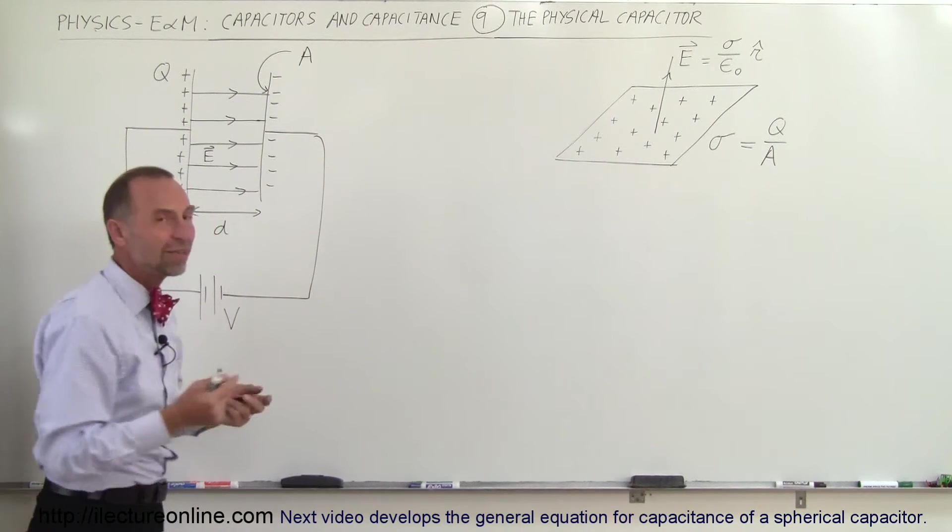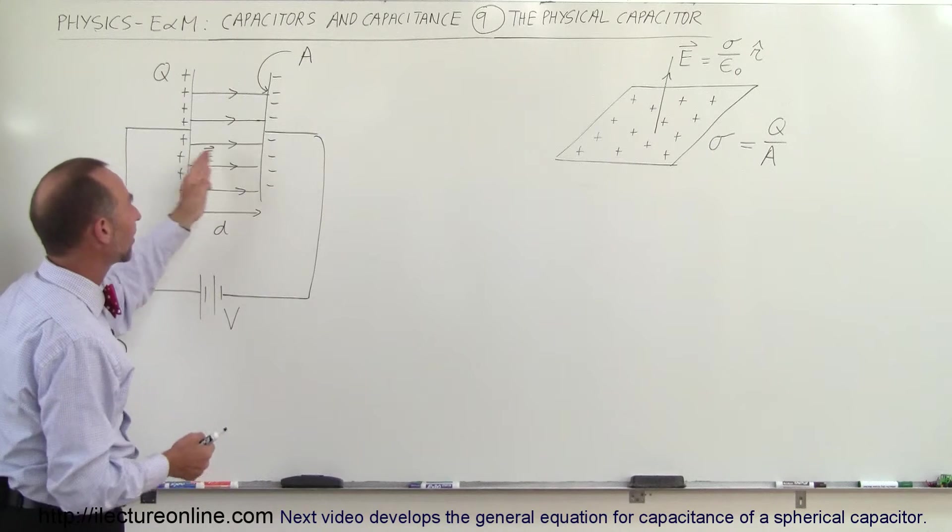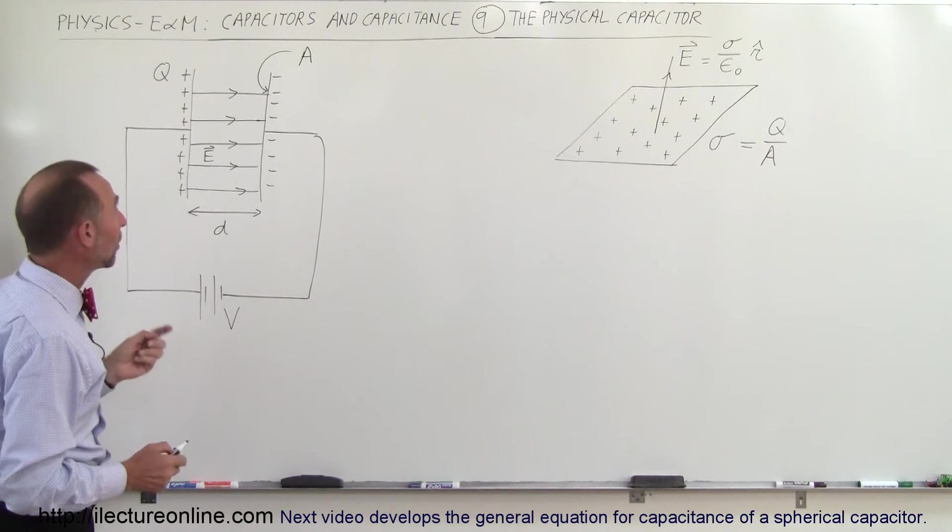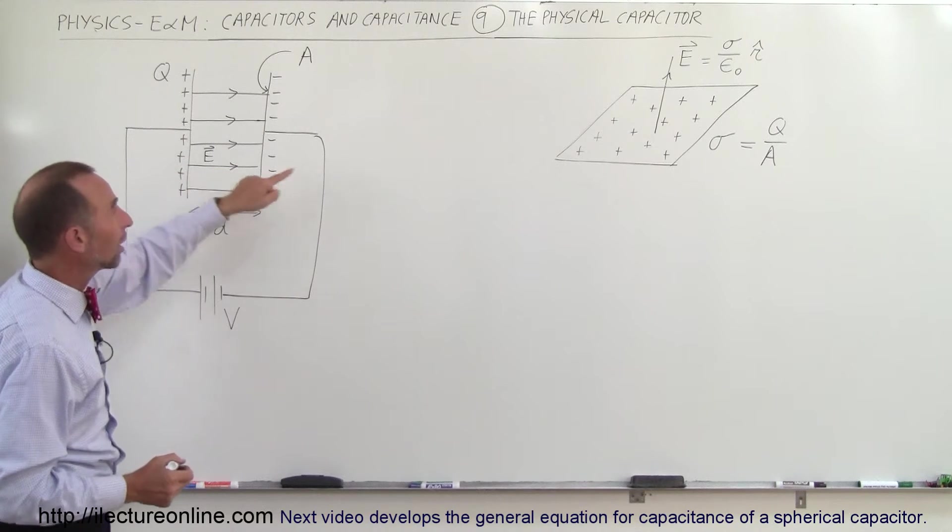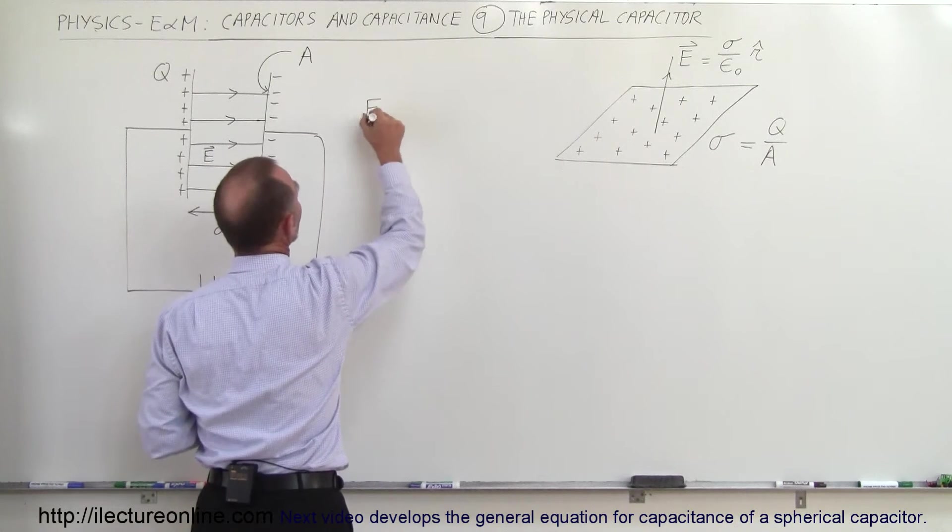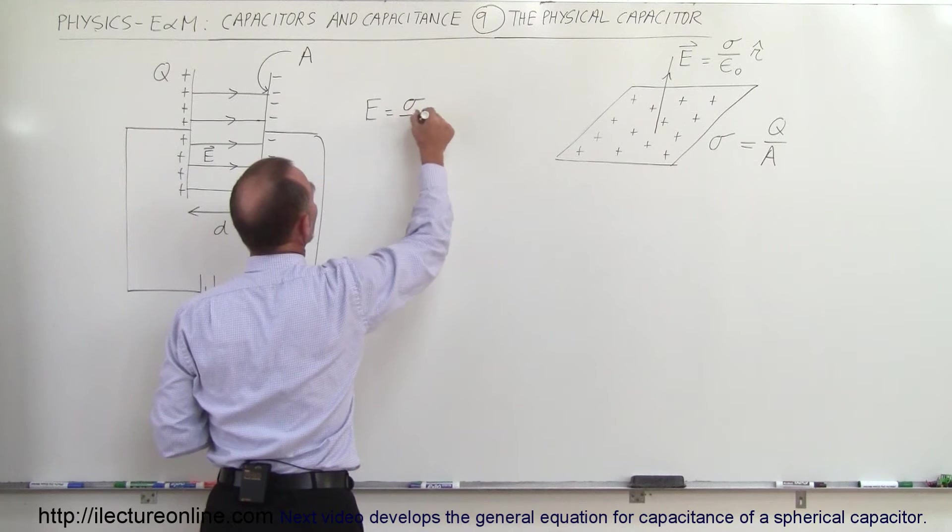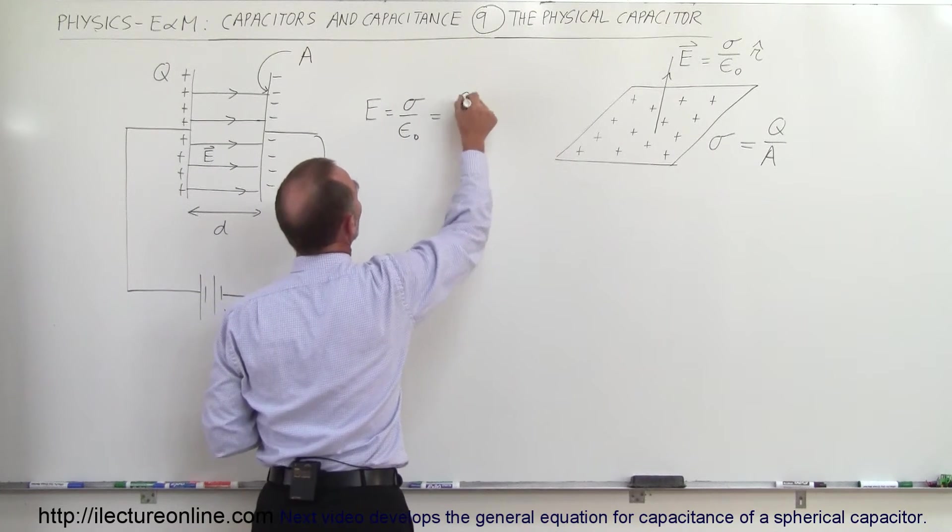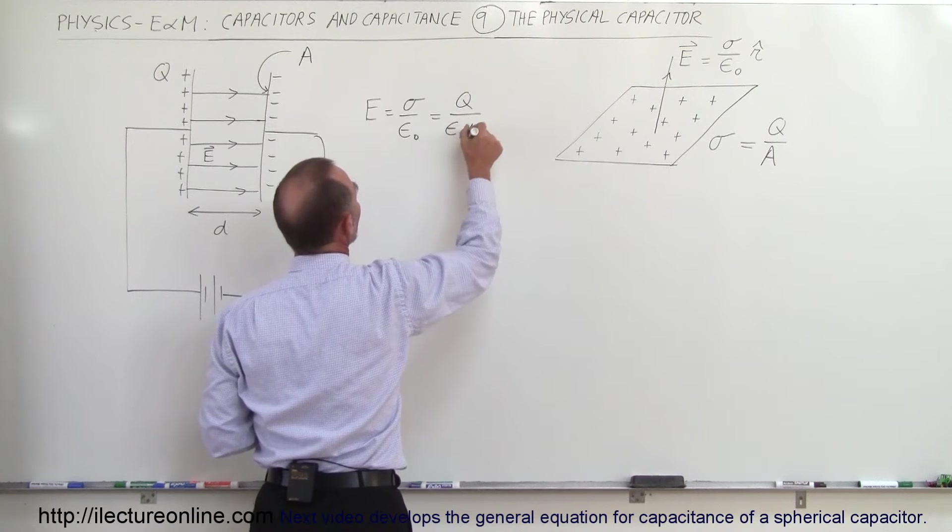And of course, epsilon sub-naught, which means that there is no dielectric inside there, there's simply air or vacuum inside the plates. So what we can say is that the electric field inside then would be equal to that. So the strength of the electric field is equal to the charge density divided by epsilon sub-naught and since the charge density is equal to Q over A, we can write this as such.